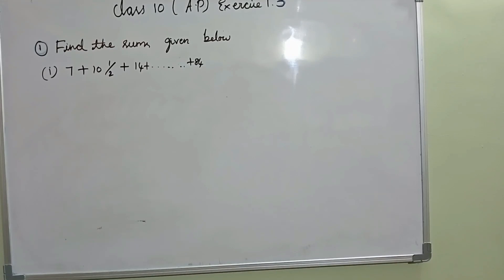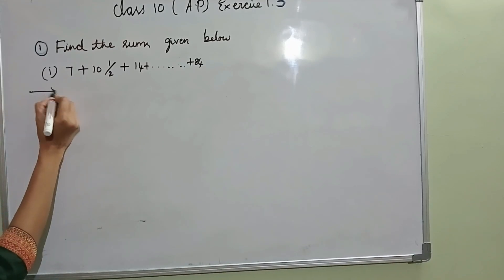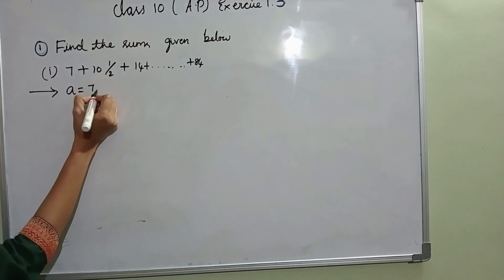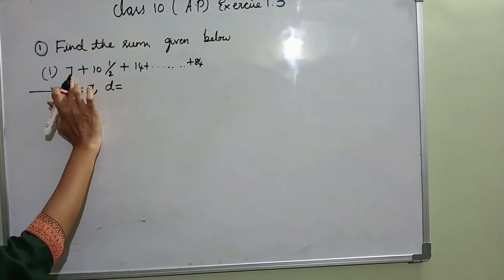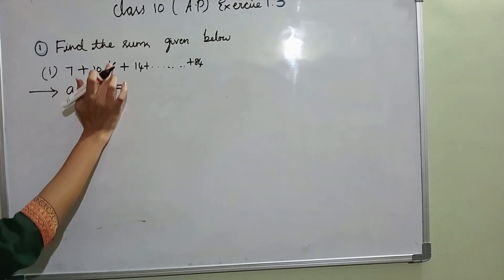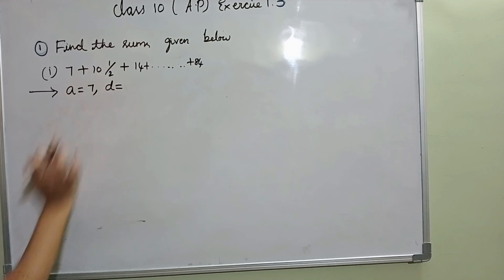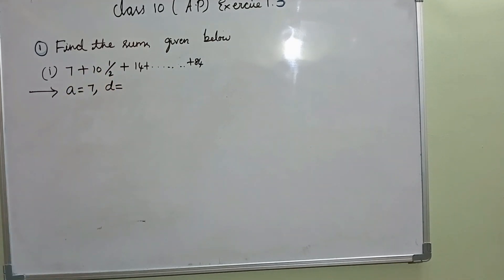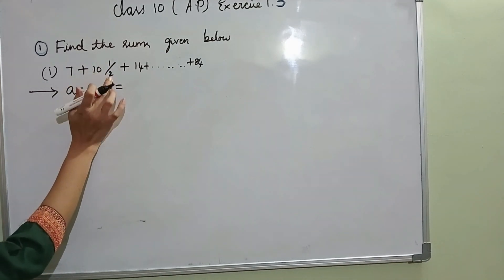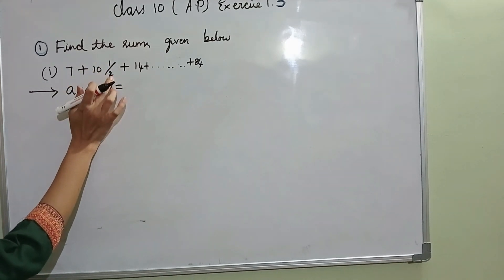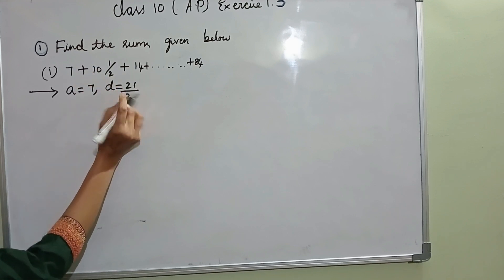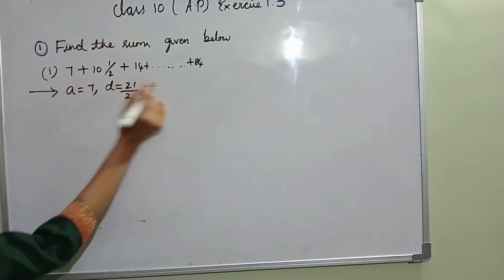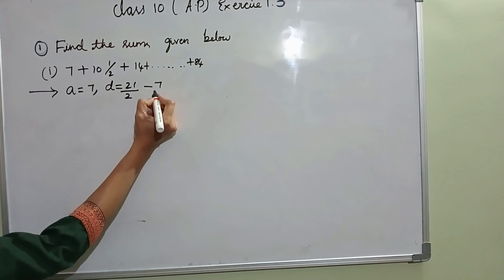Find the sum given below. They have given a value: A equal to 7. D is second term minus first term. Since it is a mixed fraction, we should convert into improper fraction. 10 and a half is 21 by 2. Second term minus first term is 7.